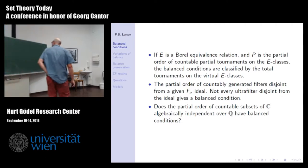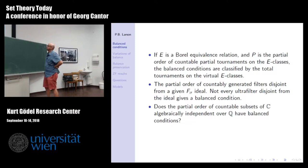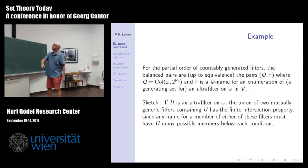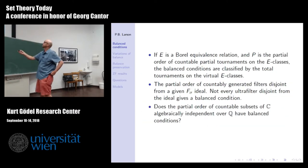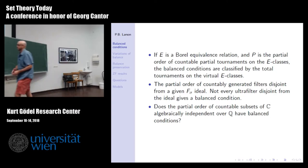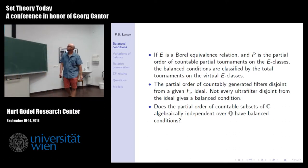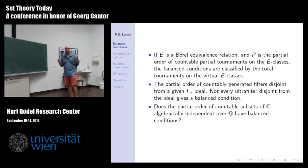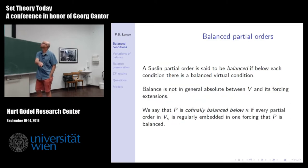If you look at the partial order of filters disjoint from a given F-sigma ideal, the class of balanced conditions is complicated — it's not just every ultrafilter disjoint from the ideal. This forcing adds a Ramsey ultrafilter, but the balanced conditions are not the Ramsey ultrafilters — they're all ultrafilters. If I try to run the intersection argument, I need to make the intersection positive for the ideal, and that's just not going to work the same way. The most interesting open case: if we look at the partial order of countable sets of complex numbers algebraically independent over the rationals, are there balanced conditions? We don't know — there might be, there might not be.